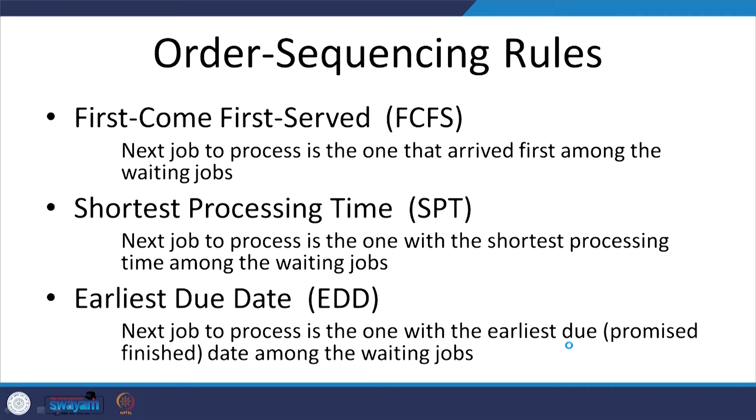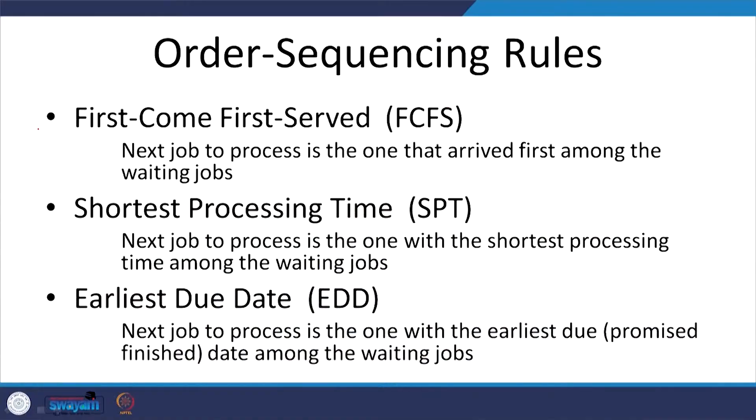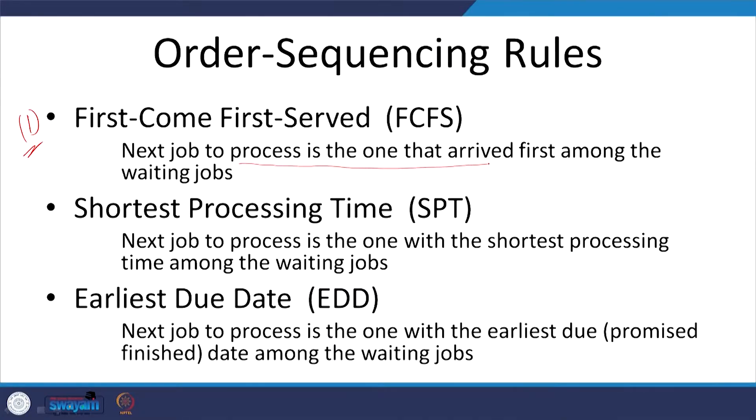The first rule is very simple to understand: first come first serve, FCFS. The next job to process is the one that arrived first among the waiting jobs. Just as customers come to a particular place, they are served on the basis of their arrival pattern. So the jobs which are coming will be served according to their arrivals.